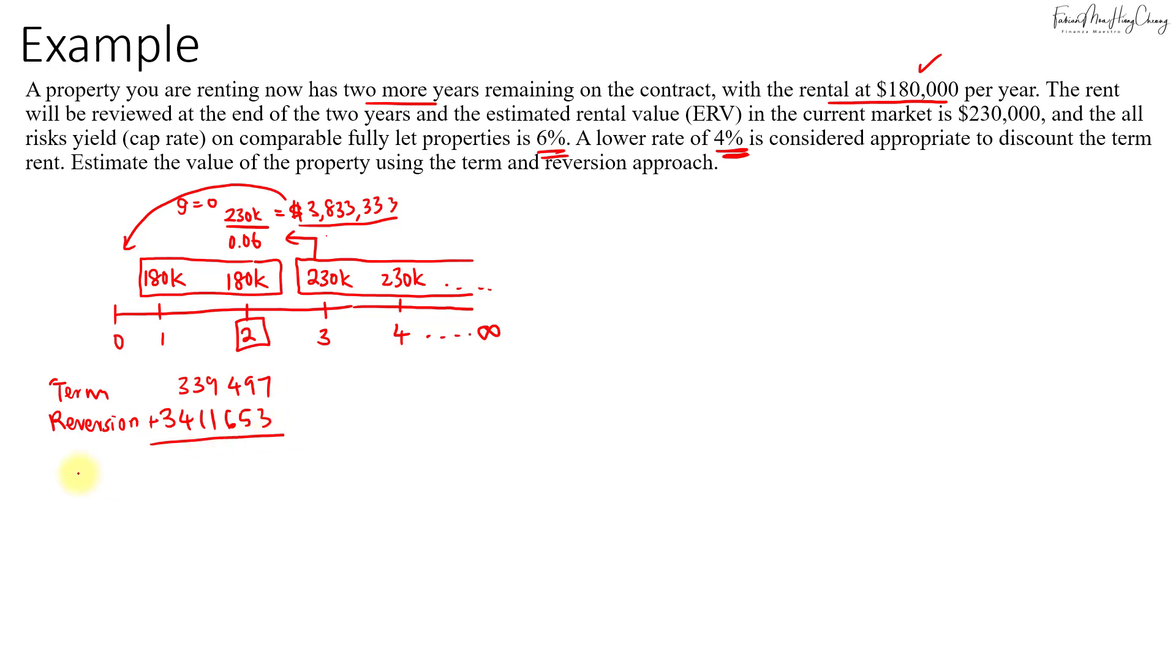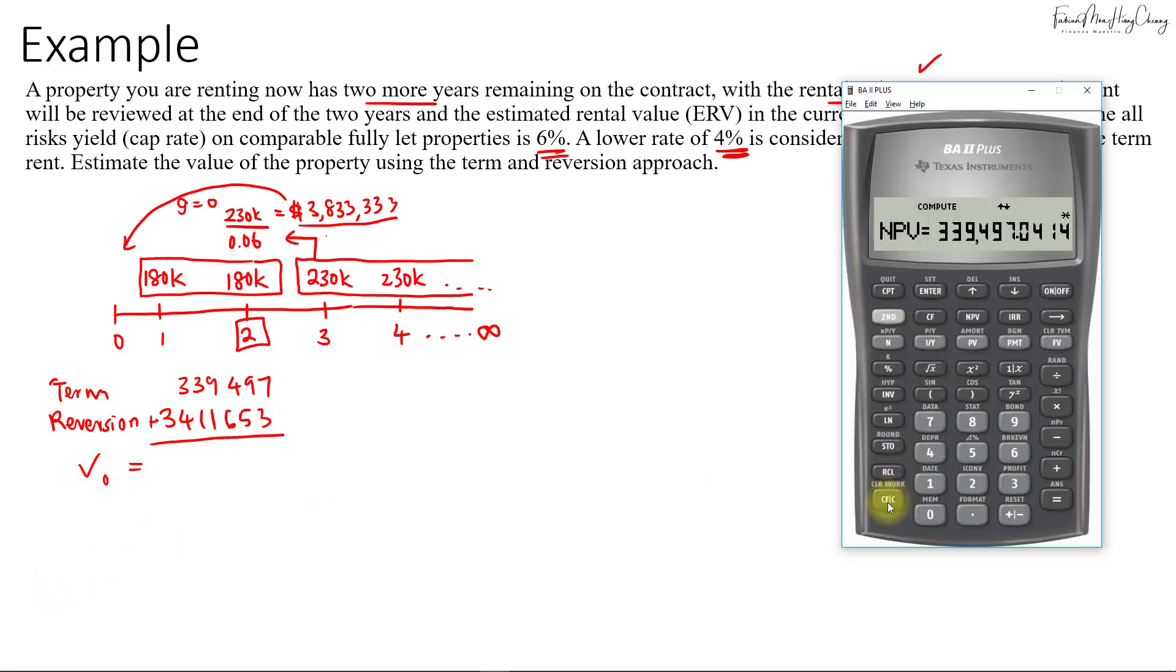So summing this up, we get the value of the property. That will be equal to $339,497 plus $3,411,653. So that's $3,751,150.